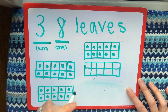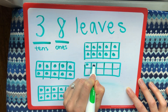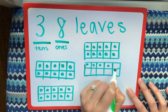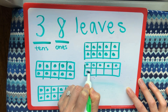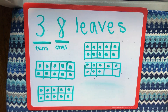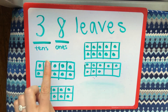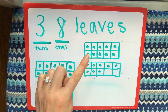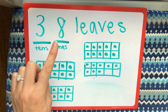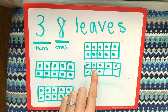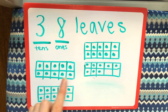Now I need to do the 8. 1, 2, 3, 4, 5, 6, 7, 8. So on my ten frames I've represented the number 38. I have 3 groups of 10, so I have 3 full frames, and then I have 8 left over — 8 ones. I show that in this frame.